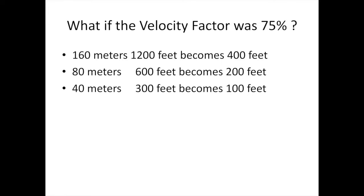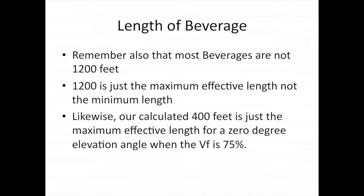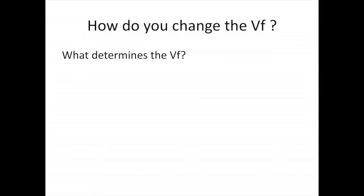Now what if the velocity factor was 75%? That means on 160 meters, what would have been a 1200 foot beverage becomes a 400 foot bog. On 80 meters a 600 foot beverage becomes a 200 foot bog. 300 foot beverage on 40 meters becomes a 100 foot bog. So we have really streamlined these antennas by just laying them on the ground. Now we also need to remember one other thing. Most beverages are not 1200 feet long. 1200 is just the maximum effective length, and it is definitely not the minimum length. Likewise our calculated 400 feet is just the maximum effective length for a zero degree elevation angle when the velocity factor is 75%.